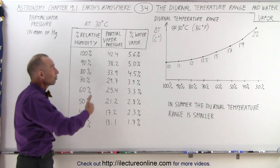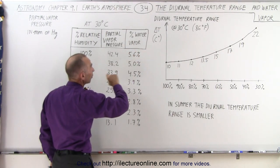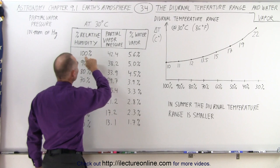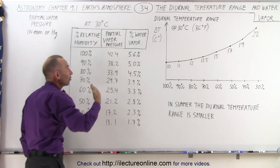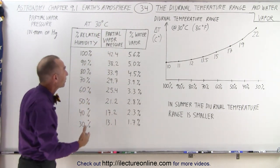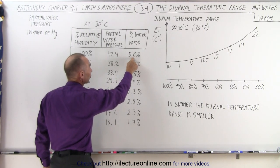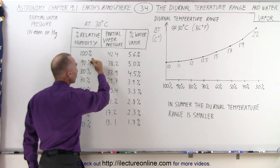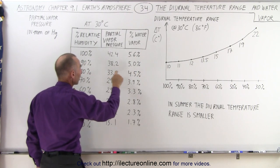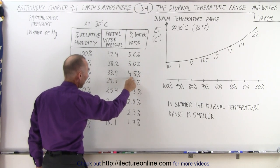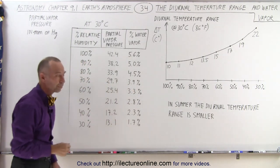Converting that into percentage of water vapor for the total atmosphere: at 100% humidity with a temperature of 30 degrees centigrade — which is about 86 degrees Fahrenheit — we have as much as 5.6% of the atmosphere being water vapor. At 90% that drops to 5%, at 80% it drops to 4.5%, and at 70% it drops to 3.9%, and so forth.